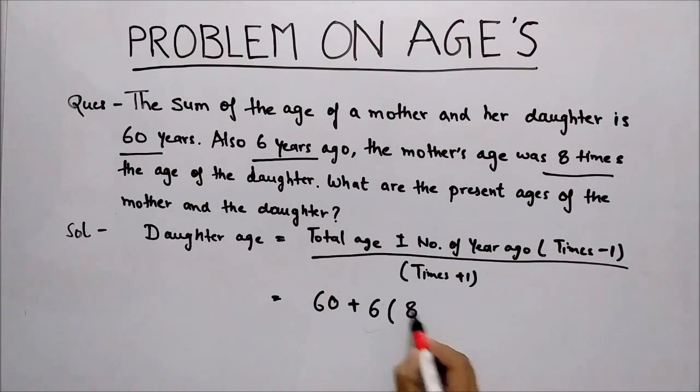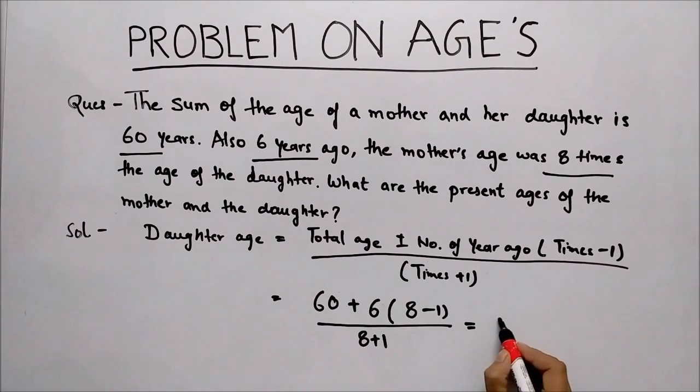The value of times is 8 minus 1 upon times plus 1, that means 8 plus 1. Now solve this equation. You will find that the daughter's age is equal to 11.33 years.